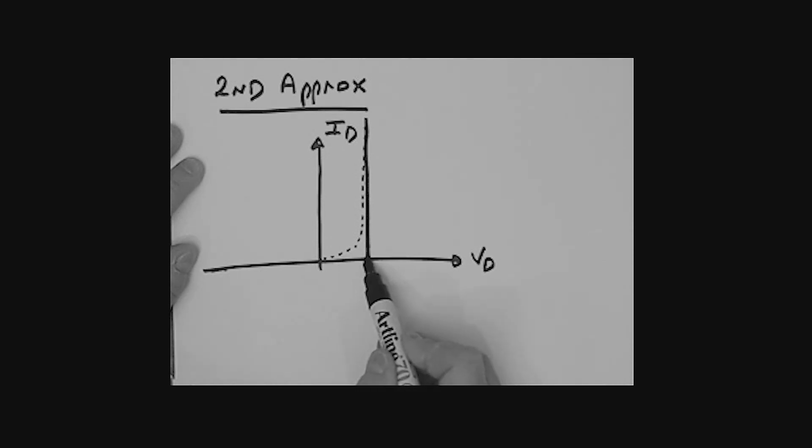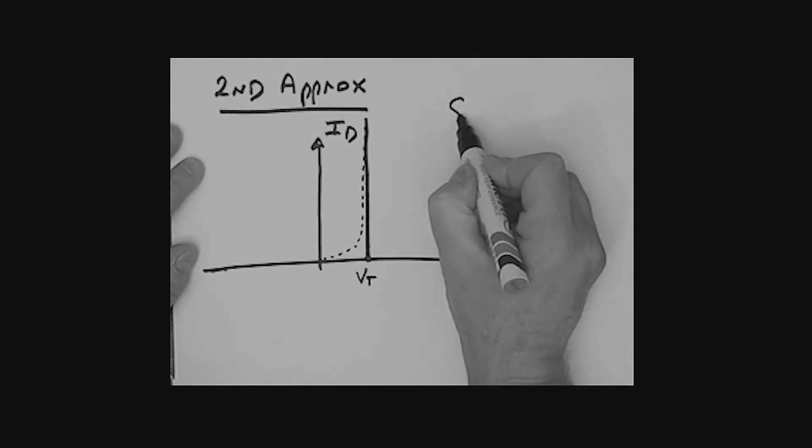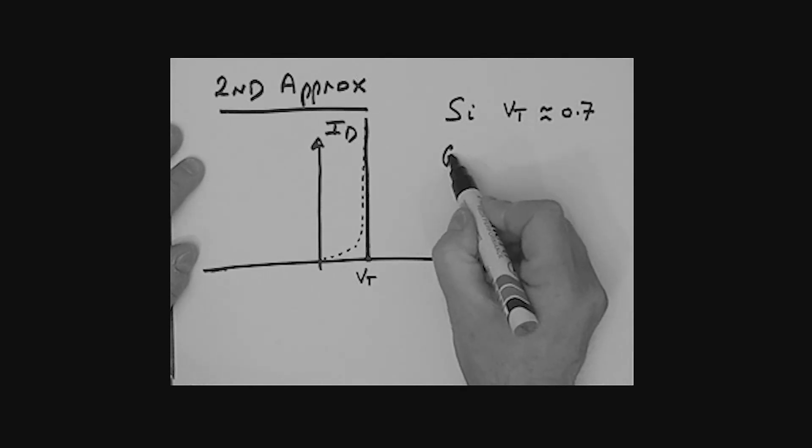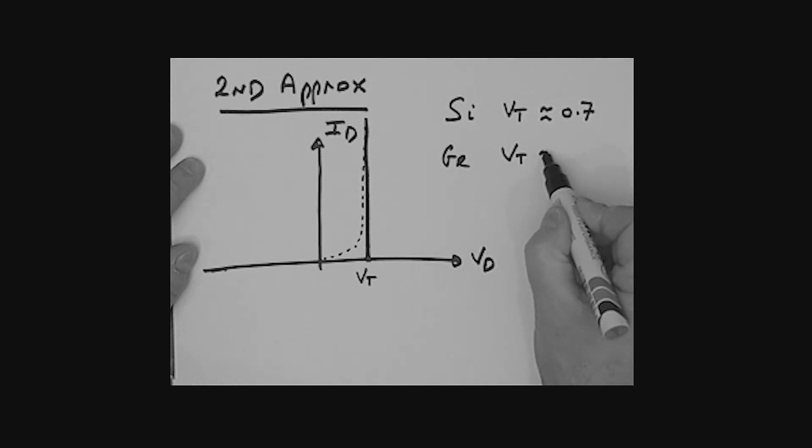Along here, the current would be zero. We refer to this voltage right here as VT. In the case of silicon, that VT would be around about 0.7 volts. In the case of germanium, that VT would be around about 0.3 volts. That's an approximation that we are going to use extensively for the diode circuits that we will be considering and looking at.